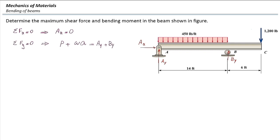The left side is known, so I can plug the values in. P is given as 1,200 pounds, and W is 450 pounds per foot multiplied by 14 feet. So we have A sub Y plus B sub Y equal to that given number. Now I'm going to use sum of the moments equal to zero. A sub X and A sub Y are not going to have any moment reaction. We do have B sub Y multiplied by that distance A, or 14 feet. There are two other moments produced by the distributed load and the concentrated force, W and P. So W multiplied by A would be the resultant force.